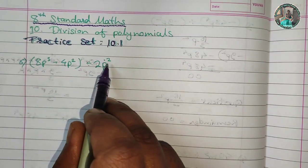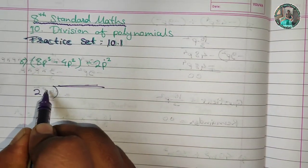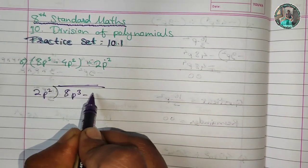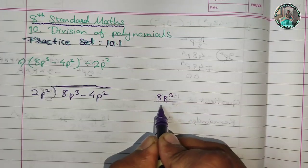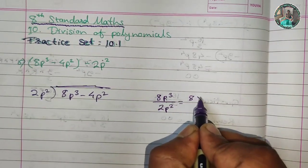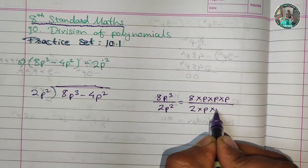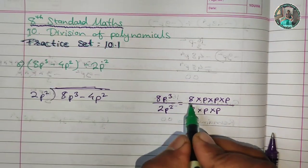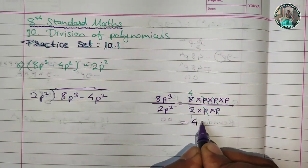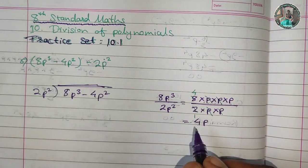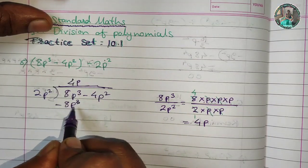First, 8p cubed divided by 2p squared. We solve it: 8p cubed divided by 2p squared. Here we see 2p squared. 8p cubed minus 4p squared. So 3p cubed minus 4p squared — let us work through this step by step.